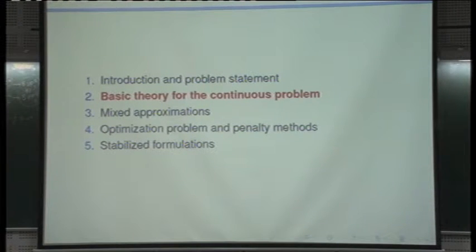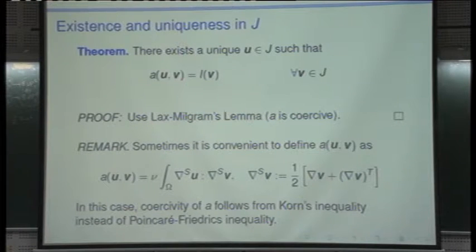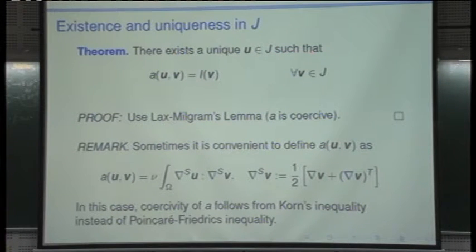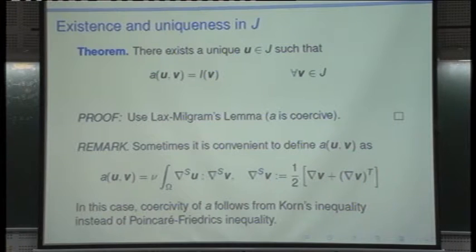The proof sketch of the abstract result proceeds as follows. First, consider the regularized problem from the perturbed Lagrangian — that's why we discussed it. For that regularized problem, Lax-Milgram directly guarantees a unique solution for all epsilon > 0, because the bilinear form is coercive: when we take test functions equal to the unknowns, the coupling terms cancel, leaving a(u,u) which is positive, and epsilon times the norm of p squared which is also positive. The coercivity constant is epsilon, so as epsilon goes to zero, coercivity is lost, but for fixed positive epsilon, existence and uniqueness follow from Lax-Milgram.